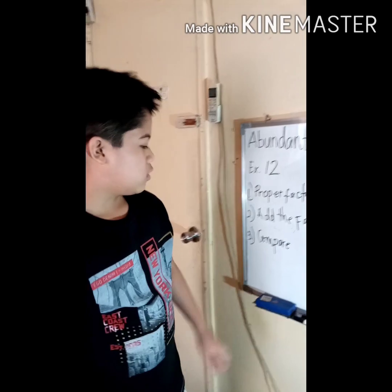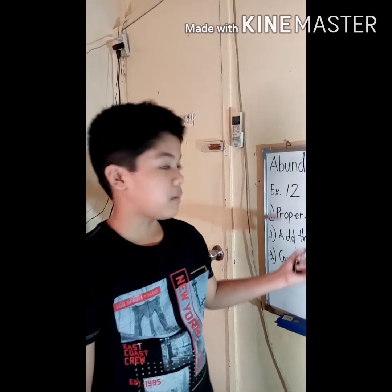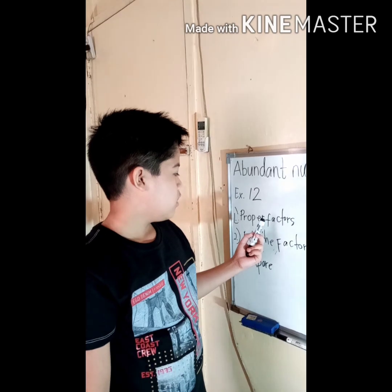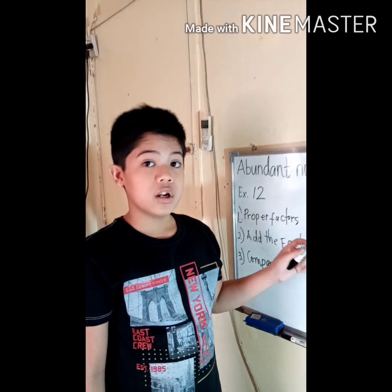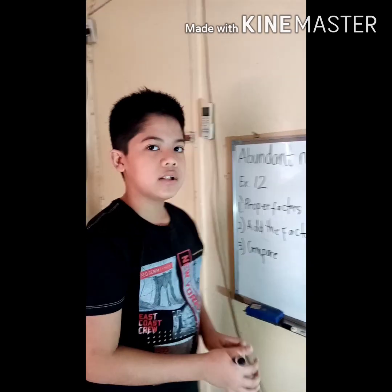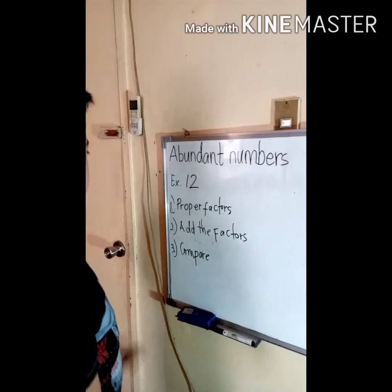Hello guys, welcome back to my channel. The topic for today will be about abundant numbers, deficient numbers, and perfect numbers. Abundant numbers are numbers in which the sum of their proper factors are greater than the number itself. That's the thing that makes a number abundant.